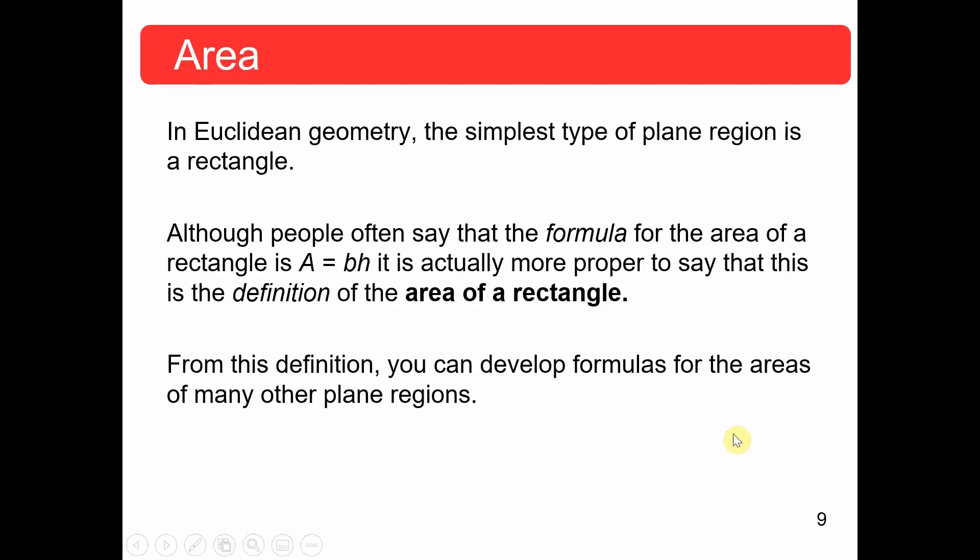So in this video, we are looking at area. In Euclidean geometry, the simplest type of plane region is a rectangle.